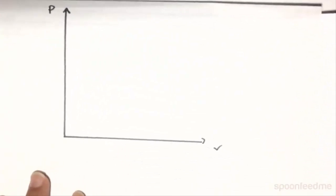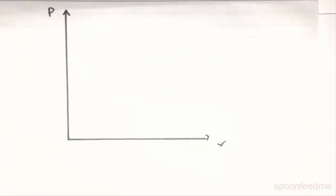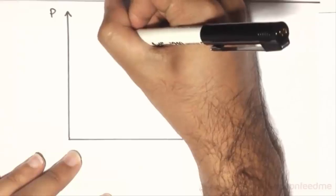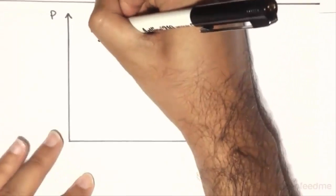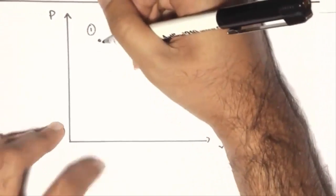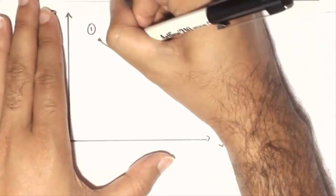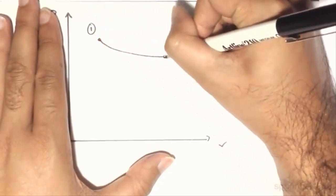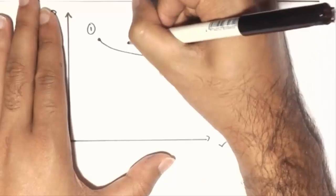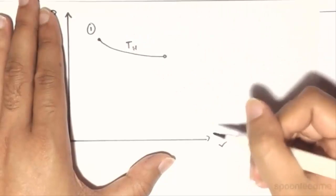If you look at it from a PV diagram, we'll have the following. So we start off at state 1 over here, and we have an expansion. So the pressure decreases and the volume increases. And this line right here corresponds to the isotherm of the higher temperature.